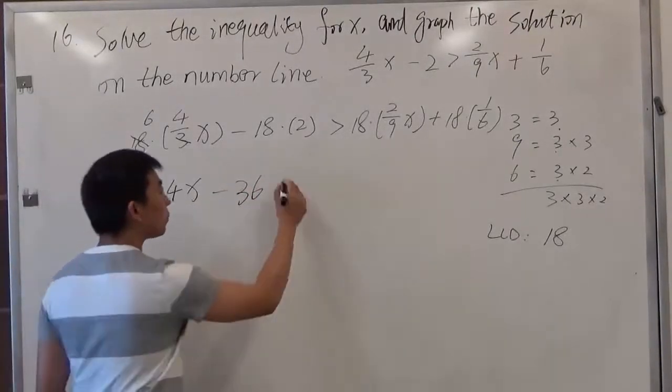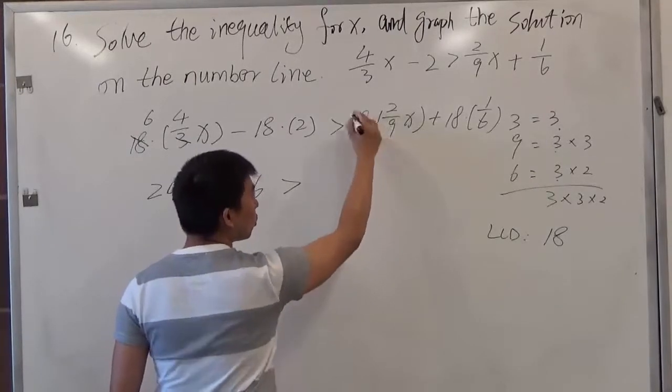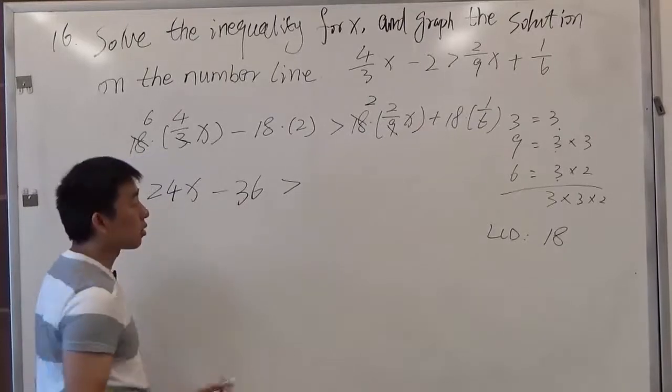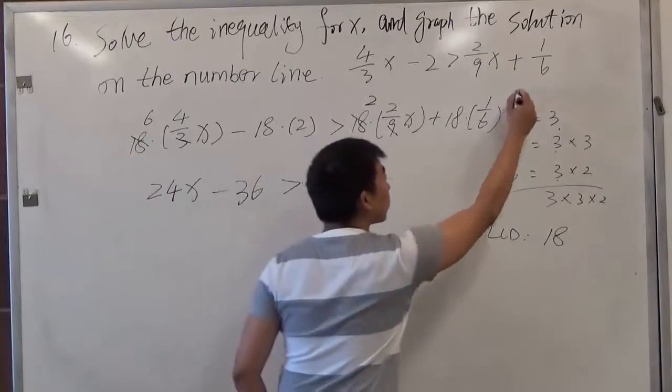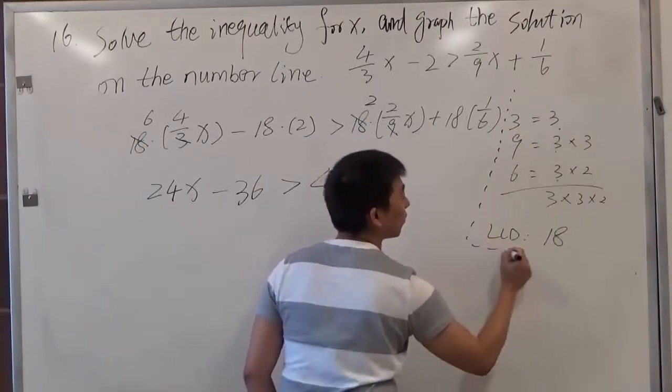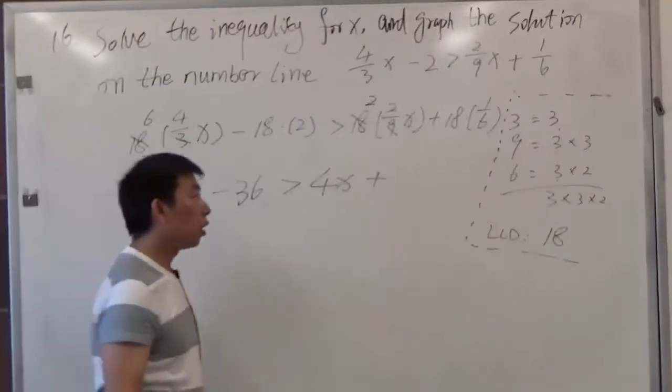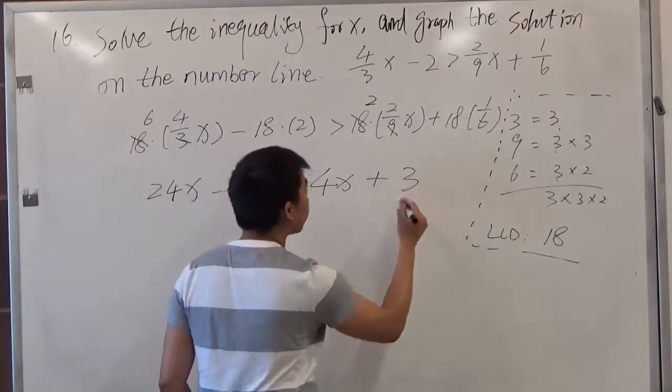It's greater than 18 divided by 9. That would be 2. 2 times 2x, that gives us 4x. Then plus 18 times 1 over 6. It's the same as 18 divided by 6. That would be 3.